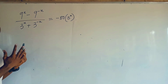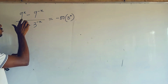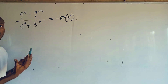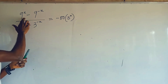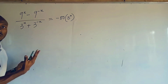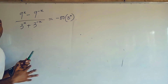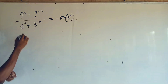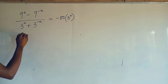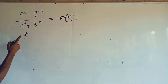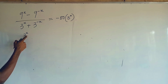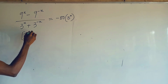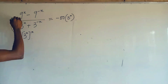The very first thing I want to do is reduce 9 in its index form. So instead of writing 9, I will write 3 to the power of 2, which is also 9. So I will write this to become 3 to the power of 2 — which is the same as 9 — all to the power of x.